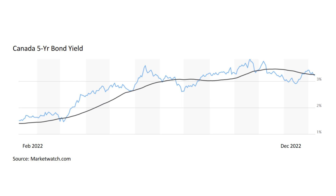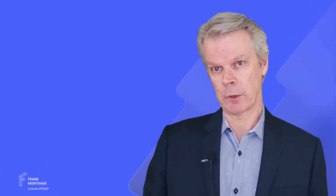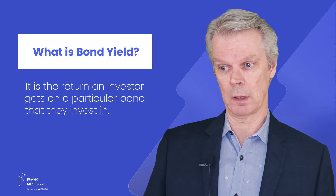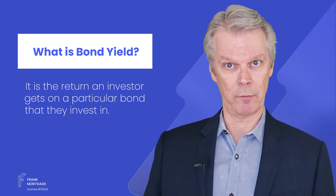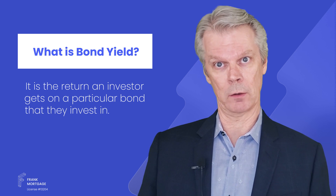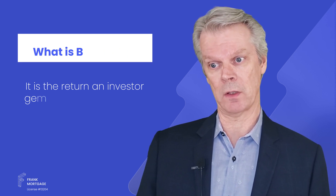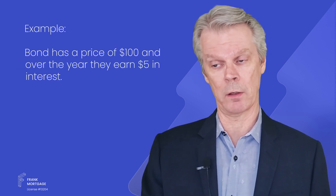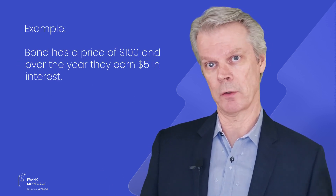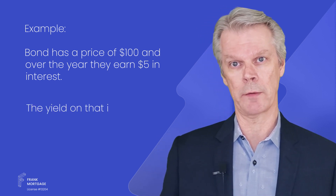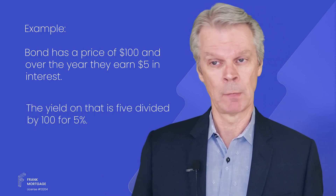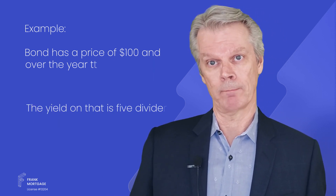So let's talk about that. But first, let's define what a bond yield is. A bond yield is the return an investor gets on a particular bond that they invest in. So if the bond has a price of, say, $100, and over the year they earn $5 in interest, the yield on that is 5 divided by 100, or 5%. Pretty simple.